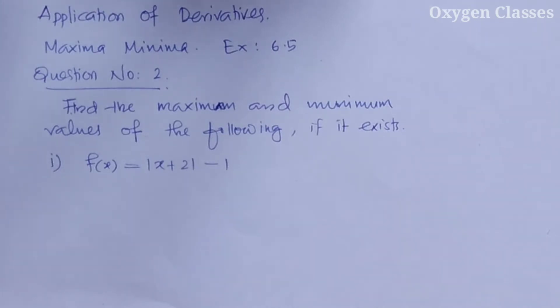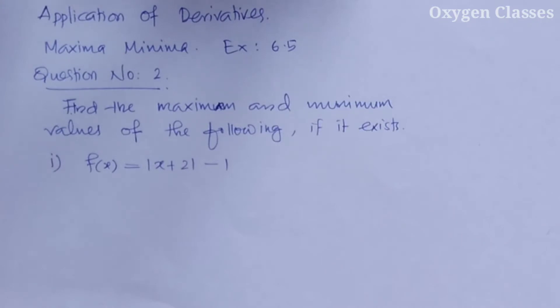Find the maximum and minimum values of the following, if they exist. The first question is f of x equal to mod x plus 2, minus 1.